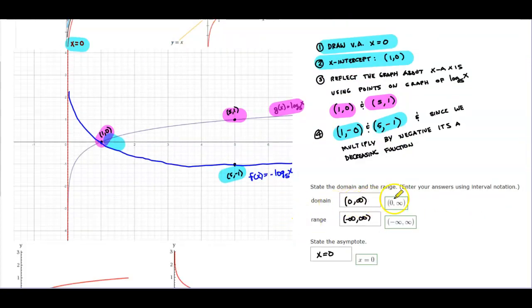And so stating the domain and range, the domain would be from zero to positive infinity. The range goes from negative infinity to positive infinity. And then we determine what the asymptote is, which is x equals zero.